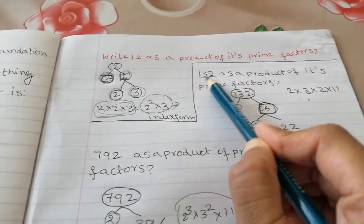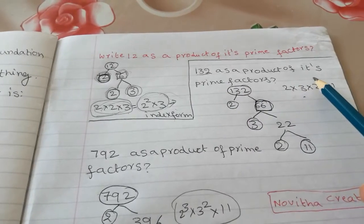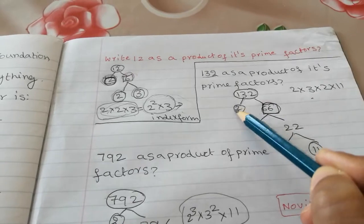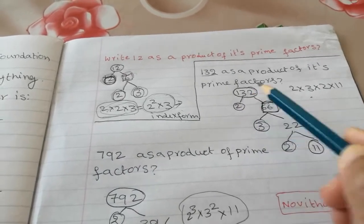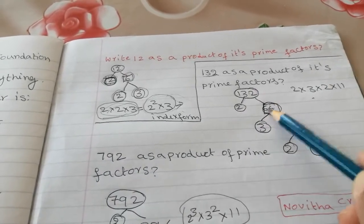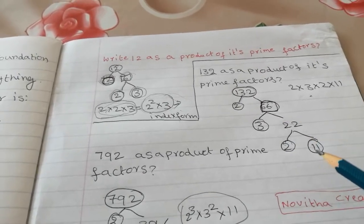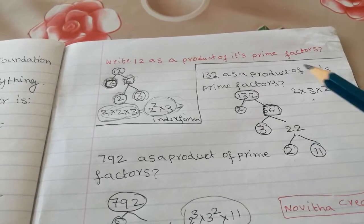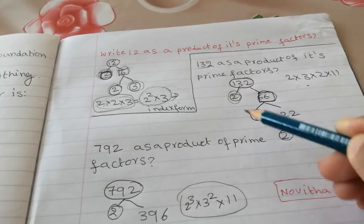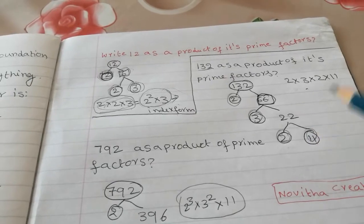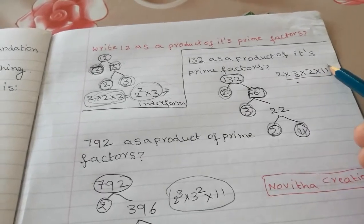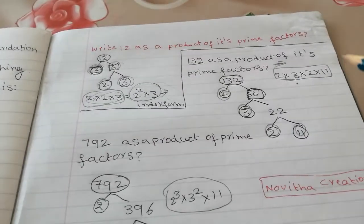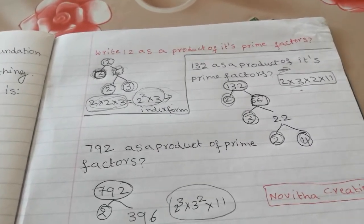Then next one is 132 as a product of its prime factors. So 132, it divided by 2 times 66 equal to 132. 3 times 22 equal to 66. And 2 times 11 equal to 22. And we need to take all the prime numbers from this tree. So 2 times 3 times 2 times 11. But here the examiner didn't ask that we need to give our answer in index form.